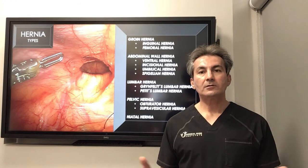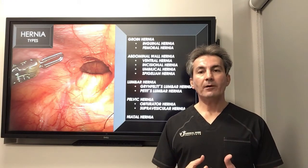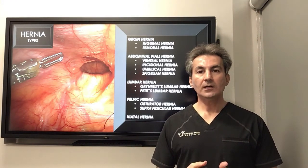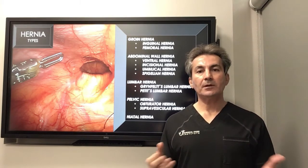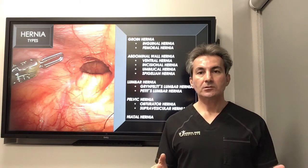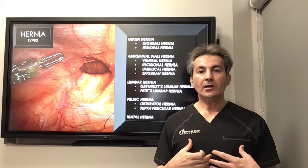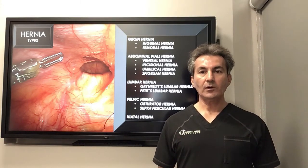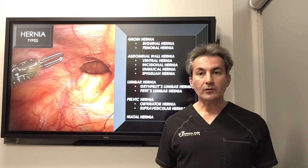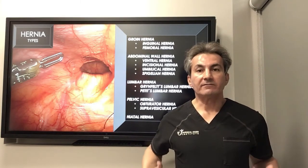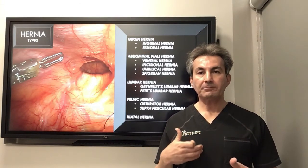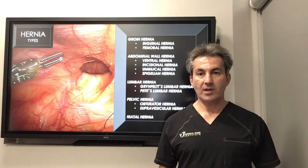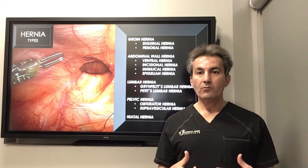Let's talk about different types of hernias. A hernia is a weakness or defect in the muscle. This muscle can be anywhere in the anterior abdominal wall, in the pelvic floor, the muscle of the back, or even the diaphragm, which is the muscle that separates your chest cavity from your abdominal cavity.